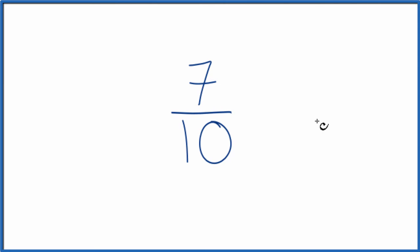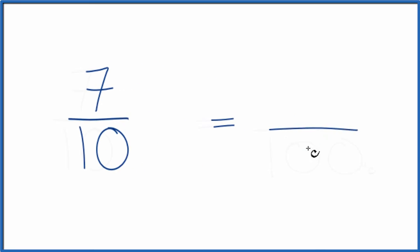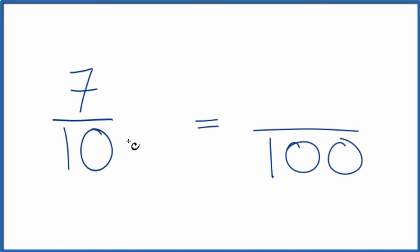First, we could try to find some way to make the denominator here equal to 100. So if we multiply 10 times 10, that would equal 100.